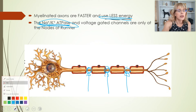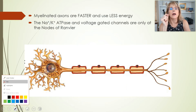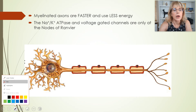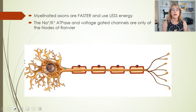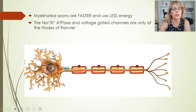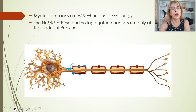The voltage-gated channels are only found at the nodes of Ranvier, which is what allows the action potential to travel faster. At the axon hillock we meet threshold, so voltage-gated channels open, they open their neighbors, and so on. When we get to the myelin sheath, that electrical charge can hop.